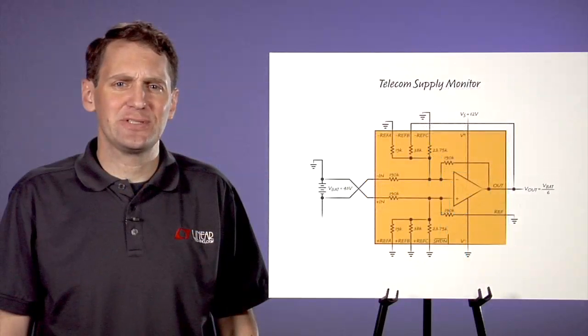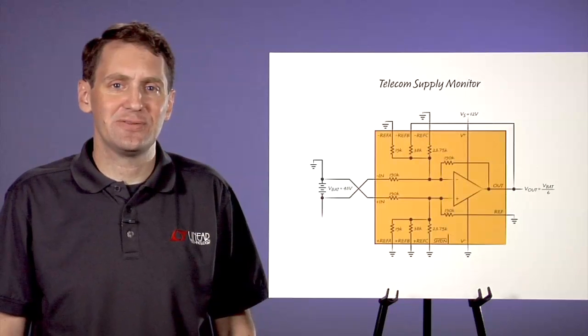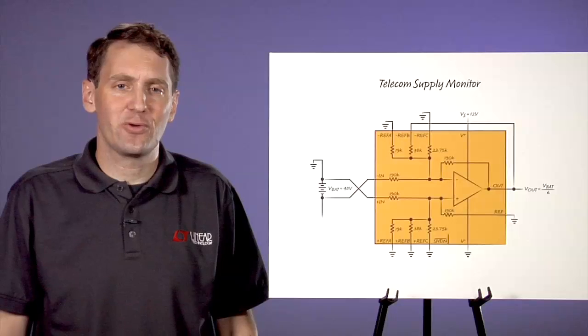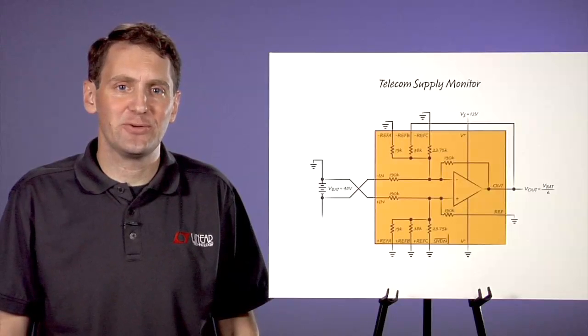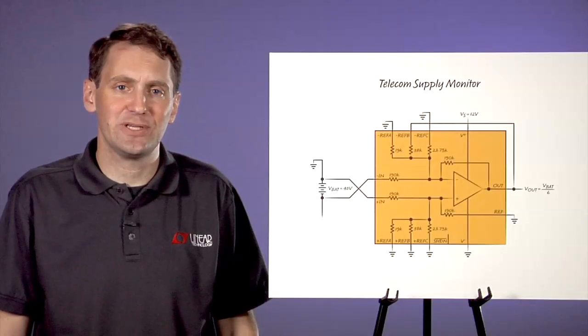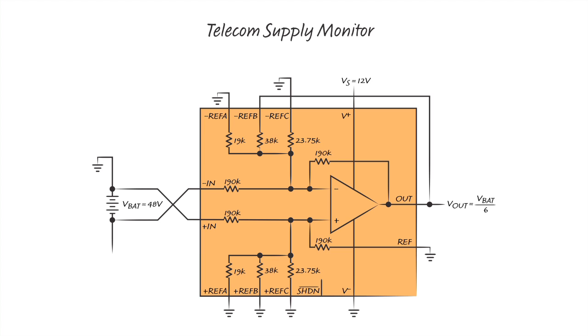In addition to current sensing, the LT-6375 is well suited for a variety of applications that can benefit from a high voltage precision difference amplifier. This is an example of one such application. Here we see the LT-6375 arranged in a different fashion in order to produce a differential gain of one-sixth rather than a gain of one. This allows us to measure the full minus 48 volt battery voltage and produce an output voltage that can be processed by lower voltage circuits.